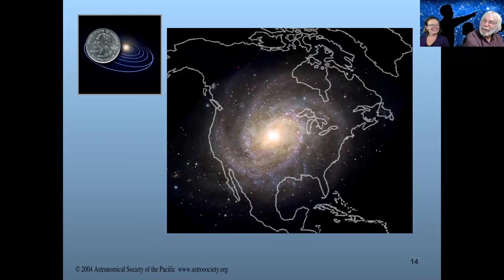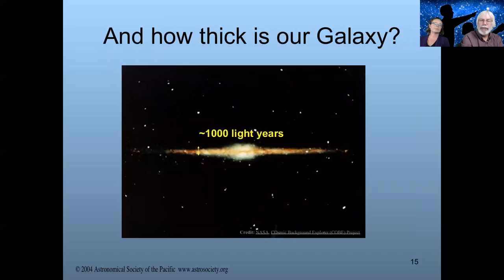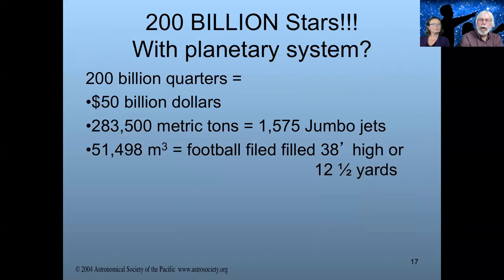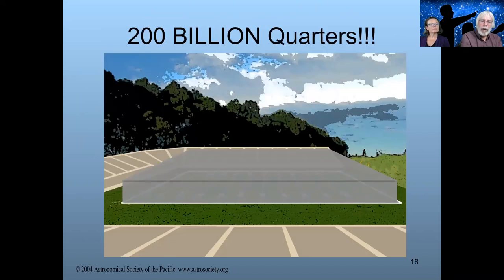Here we've got the continent of North America — that's how big we need to be to represent our galaxy coast to coast, and our solar system is one little quarter, located right around Reno on this particular map. The other thing to consider is how thick our galaxy is — about 1,000 light years thick. On our scale of 40 light years to the mile, that means we're looking at about 25 miles thick. So the galaxy on this scale would be 2,500 miles across and 25 miles thick — that's where all of the stars are scattered.